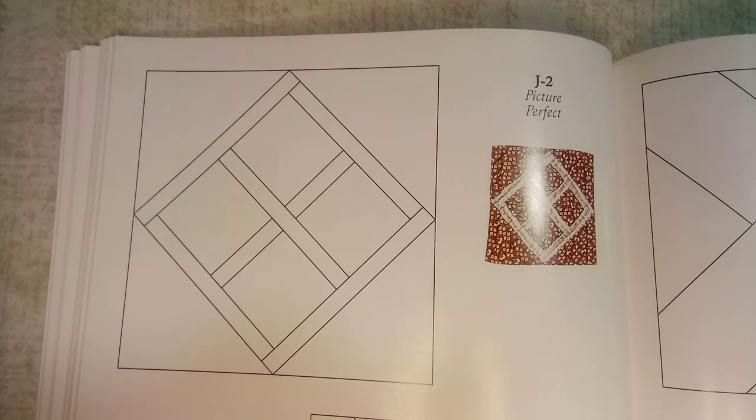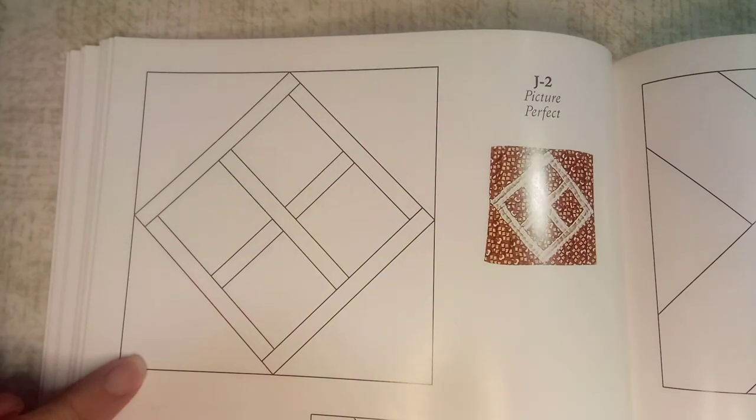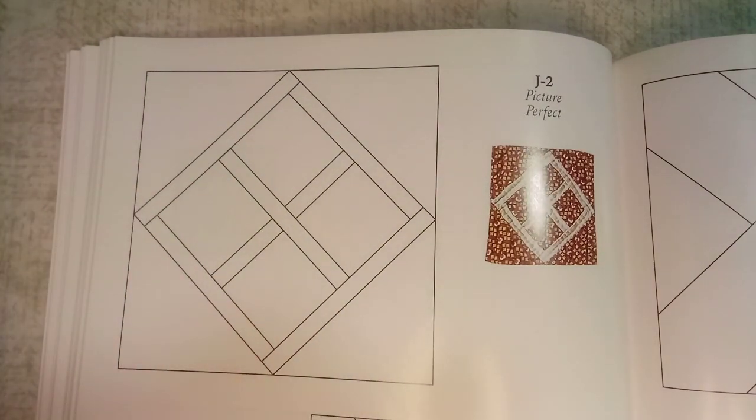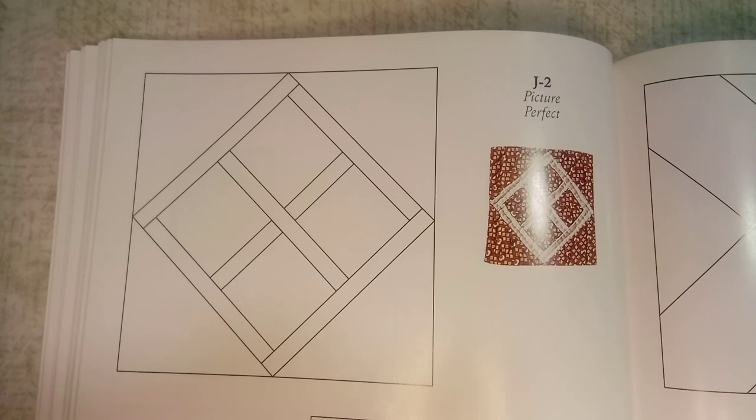Also from the focus fabric, we're going to cut two squares that are four inches, and then we'll cut them apart on the diagonal so that each half will be on opposite sides of that square.